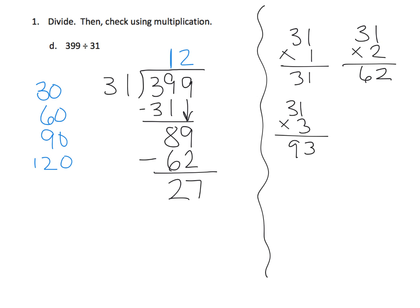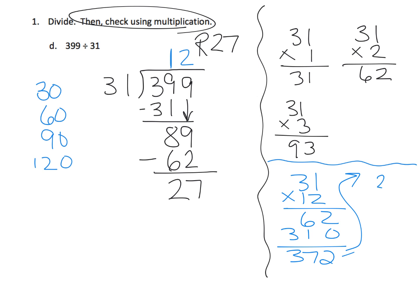So our answer is 12 with a remainder of 27. Now, how do we check? Well, we need to check using multiplication. So we are going to, I'll do the check down here in blue. So we're going to do 31 times 12. 31 times 12 is 372. But then, up here, 372. We're going to add in our remainder of 27. And sure enough, we get 399, which is exactly what we wanted. So that tells us that our answer of 12 with a remainder of 27 is probably correct.